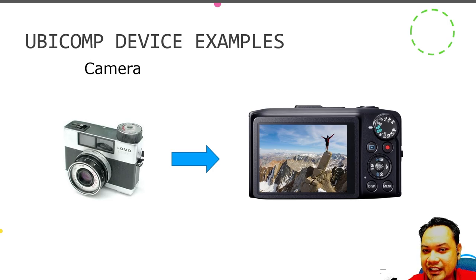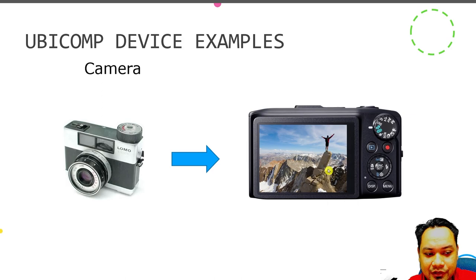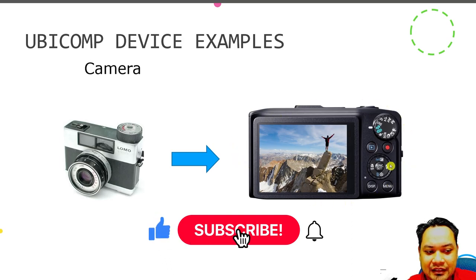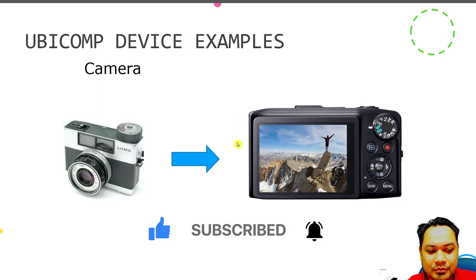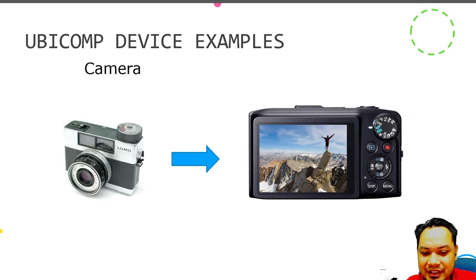The most obvious evolution happened within the lecturer's lifetime. During his teens, almost all cameras were the manual analog type with no form of computer. If you see anyone taking photos at a wedding or formal gathering, most probably they are using a digital camera now. In fact, most students haven't seen an analog film camera at all — the last time the lecturer saw one was about twenty years ago.